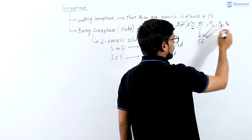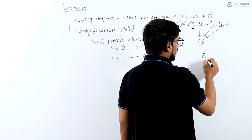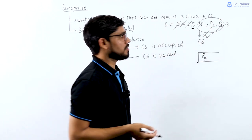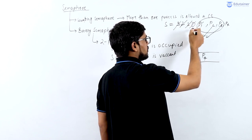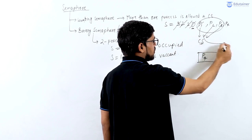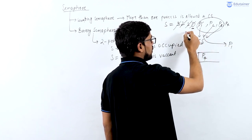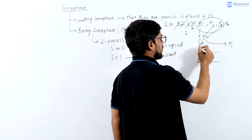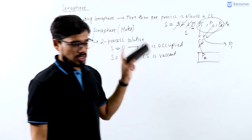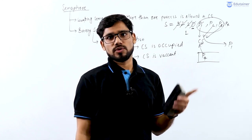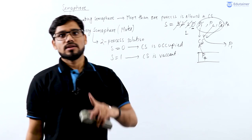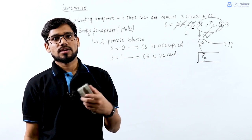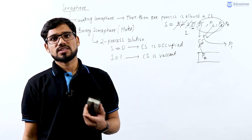When process P4 tries to access the critical section, it is not allowed and waits in a queue. Whenever one of the three processes comes out of the critical section, they have the responsibility to increment the counting semaphore. Say P1 comes out — it increments the counting semaphore by 1, making it 1, and P4 gets a chance to access the critical section. So whichever process enters the critical section decrements the counting semaphore by 1, and whichever process exits increments it by 1.